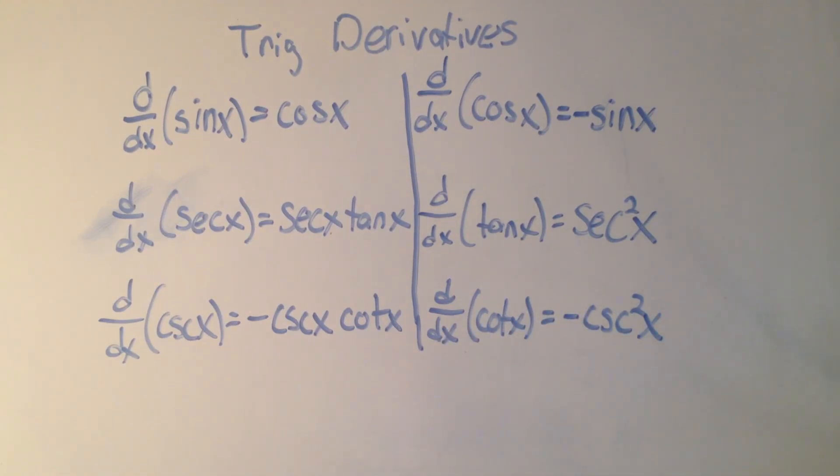Another thing you can remember is that whenever you take the derivative of a co-function - cosine, cosecant, or cotangent - they all have minus signs in front of them. But other than that, there's sort of only three you have to remember, not six. We'll do a couple of examples.